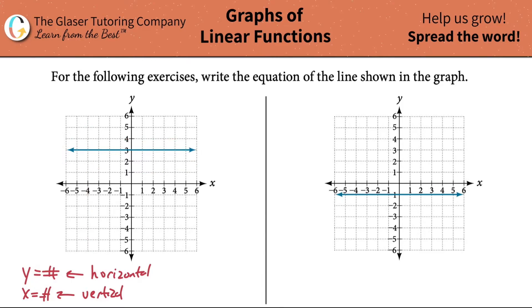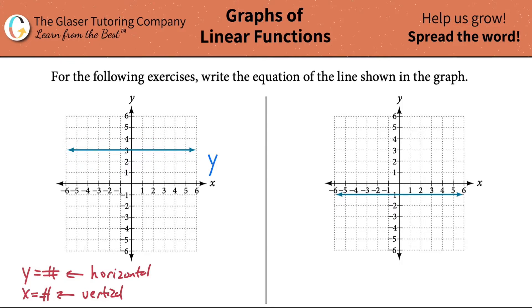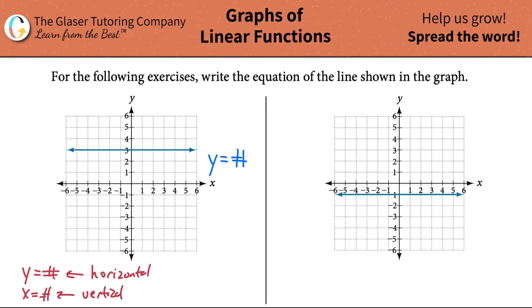So what type of a line is this? It's horizontal. That means y is going to equal some constant. So what's the y value of every point along this line? Well, it's always going to be 3 — every point has a y coordinate of 3. So the equation is y is equal to 3. And it's literally that simple.